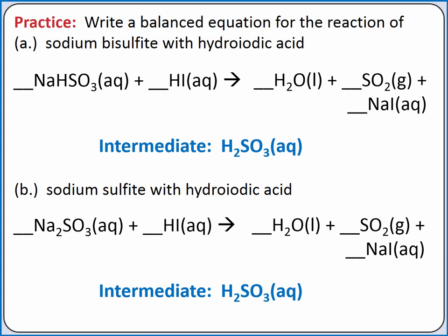Sulfite requires two H-plus ions to produce sulfurous acid, so we need two HI. This also means we will produce two sodium and two iodide, so we need two sodium iodide. We still only produce one water and one sulfur dioxide gas because we still only had one sulfurous acid decompose.